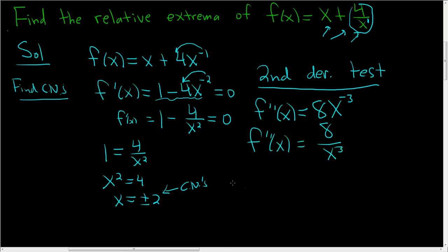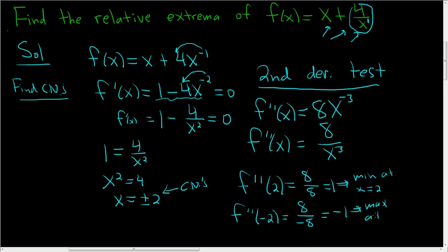All we have to do now is plug in our critical numbers. So f double prime of 2, that's going to be 8 over 2 cubed. So 8 over 8, which is 1. So we're going to have a min at x equals 2. And then f double prime of negative 2, that's 8. Negative 2 cubed is negative 8. So we're going to have a max at x equals negative 2.